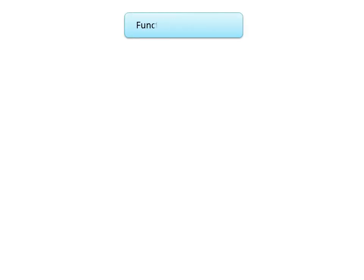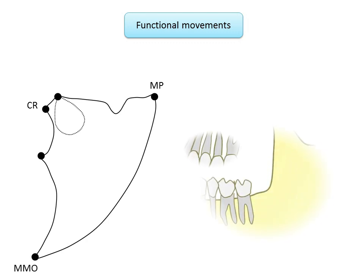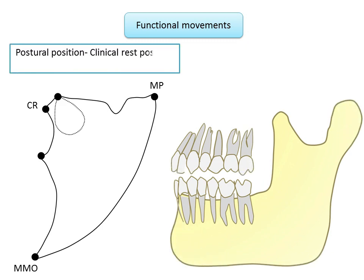To measure functional movements, we assess the clinical rest position or postural position. Since the clinical rest position is not a true resting position, it is found approximately 2 to 4 millimeters below the intercuspal position. When the chewing cycle is recorded in the sagittal plane using a pantograph, a characteristic teardrop tracing is obtained.